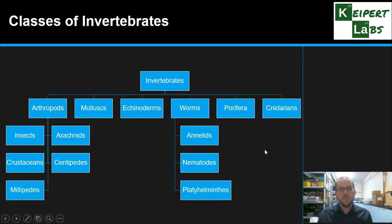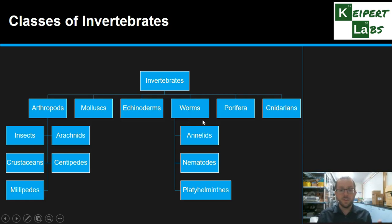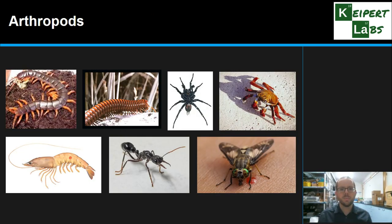Here is the roadmap of the different classes and groups of invertebrates that we can classify them into. We've got six main areas that we're going to look at. Arthropods and worms — which is not a scientific definition, just a way to cluster them together — can be broken down further into smaller groups based on other similarities. We're going to go through each one in turn, starting with the arthropods.